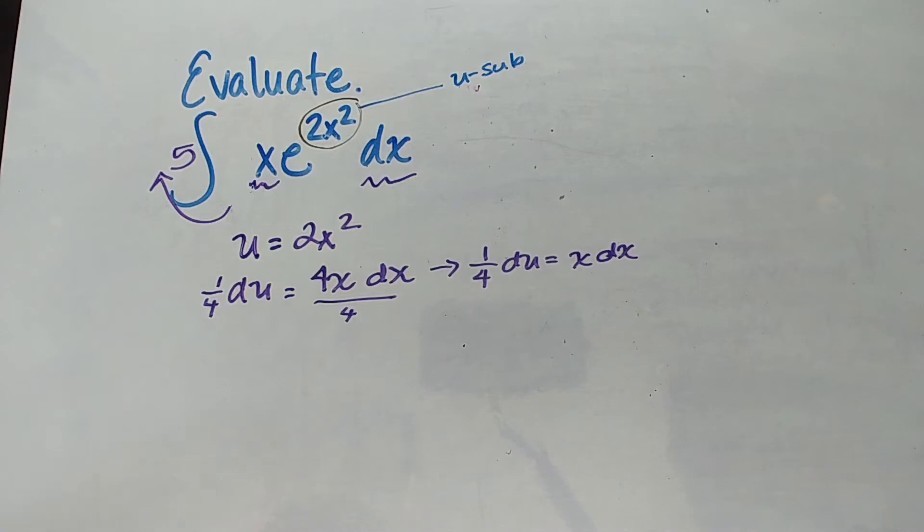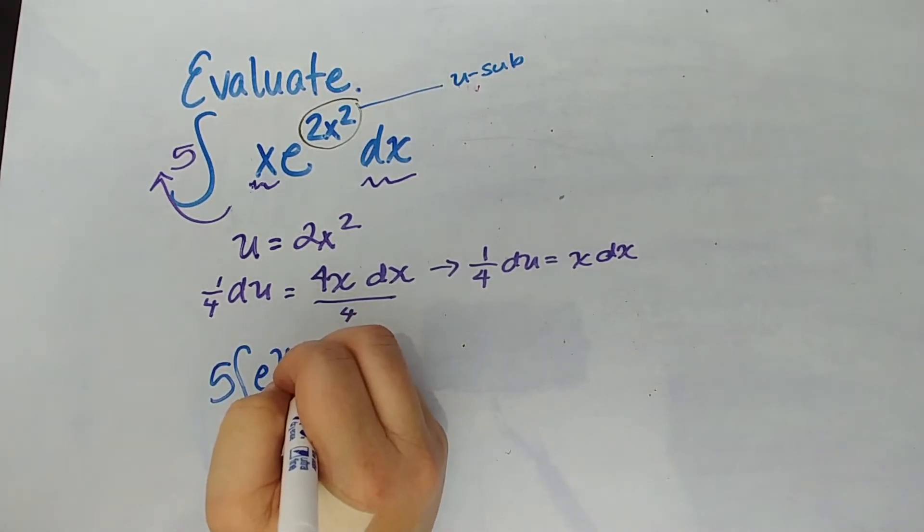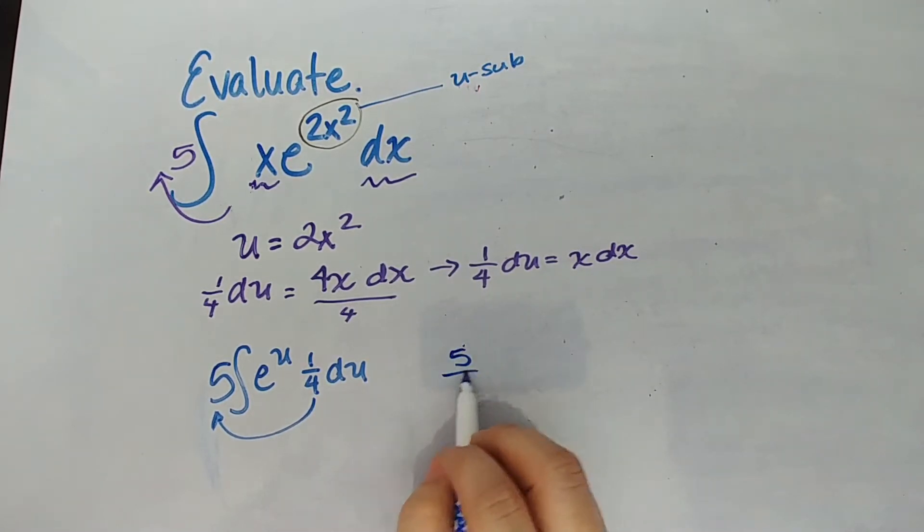Let's let e be what I or u be what I said it would be. So we have this five right and let's move this up a little bit. We have five times the integral of e to the u and now it's not du. It's technically one-fourth du. So let's fix that up by moving that out.